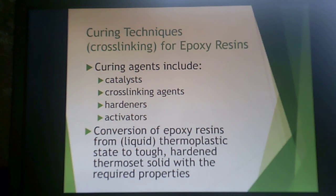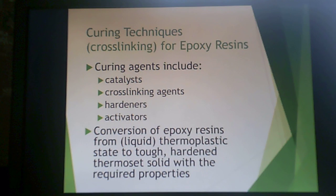There are different ways of curing epoxy resins. Curing agents include catalysts, cross-linking agents, hardeners, or activators, and some of these terms mean the same thing. Basically you're converting the liquid epoxy resin from a thermoplastic state into a tough, hardened thermoset solid with the required properties. Like any thermoset, you're cross-linking it for that purpose.